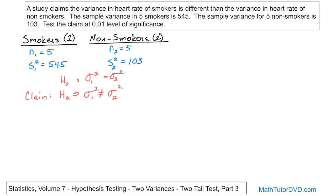The level of significance is 0.01, which means a 99% level of confidence — a really high bar. What we want to do at this point is draw a picture, draw our rejection regions, calculate the boundaries for those rejection regions from the tables, then figure out where the test statistic falls, and then either reject or fail to reject the null hypothesis.